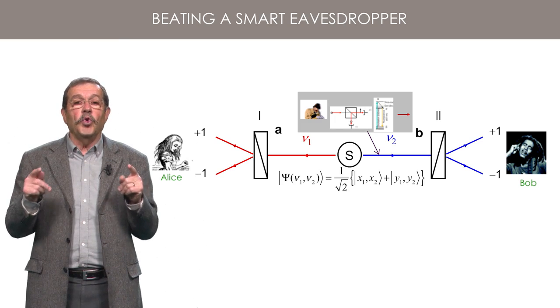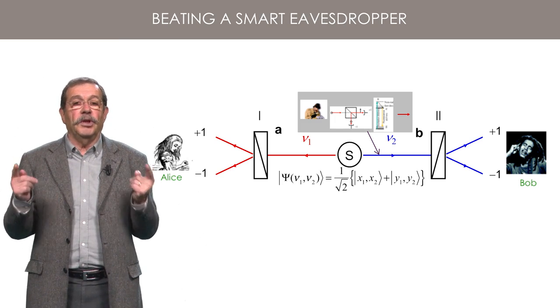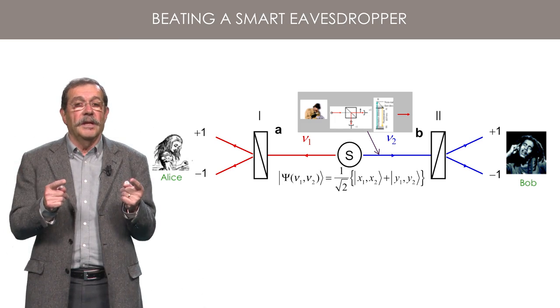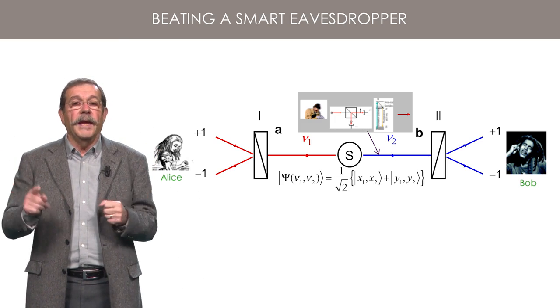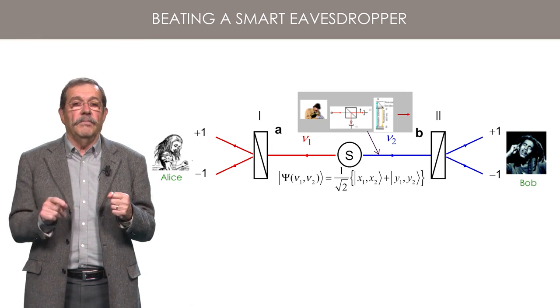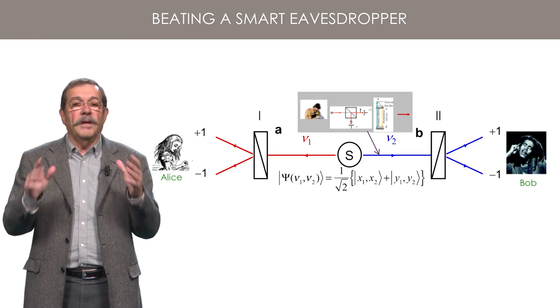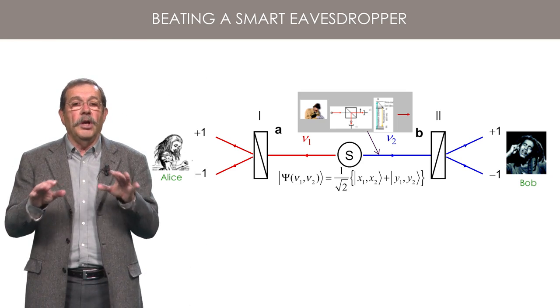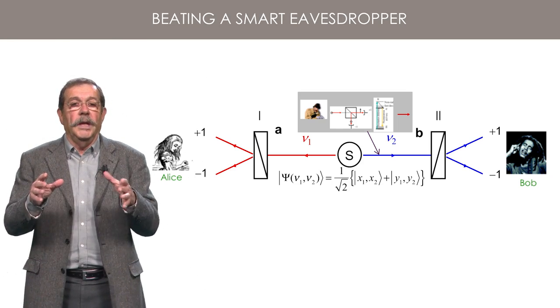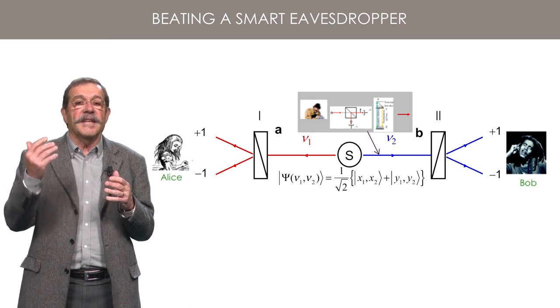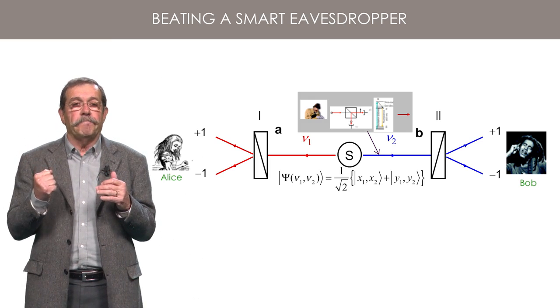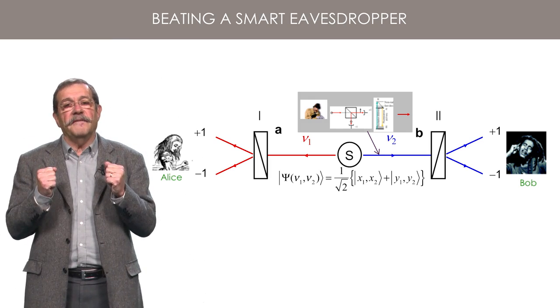To beat such a smart and well equipped eavesdropper, it is possible to use a basic quantum property of single photons already used in the BB84 method. It is not possible to determine the polarization of a photon unless one knows a priori along which set of orthogonal axes it is expected to be polarized.